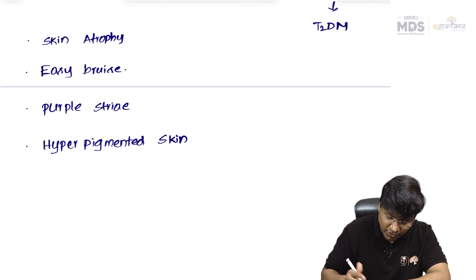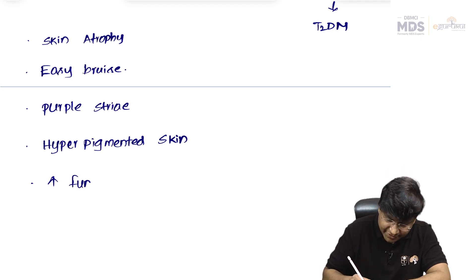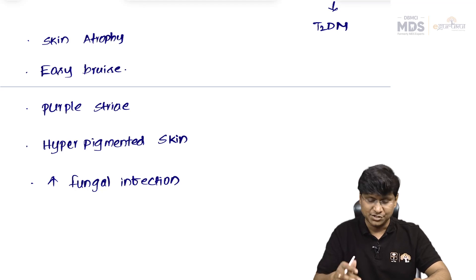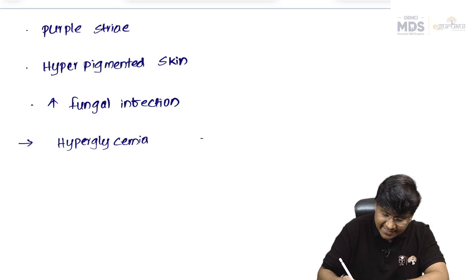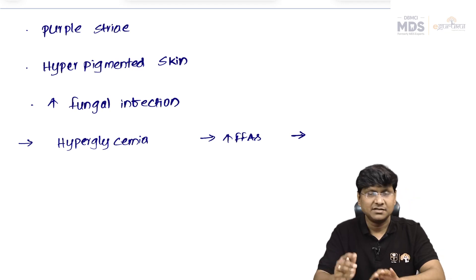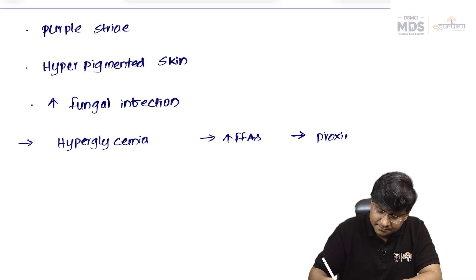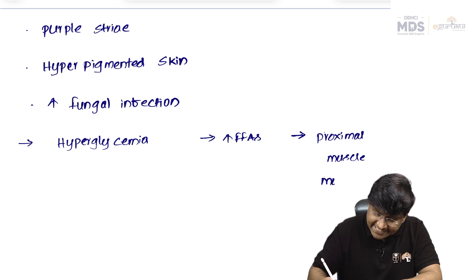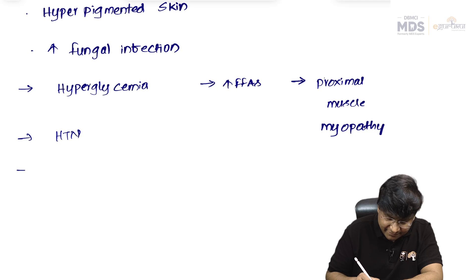Patients also develop an immunocompromised state causing increased fungal infections. Regarding metabolism: carbohydrate metabolism leads to hyperglycemia; lipid metabolism causes dyslipidemia and lipolysis with increased free fatty acids; protein metabolism shows excessive proteolysis causing proximal muscle myopathy. Cardiovascular manifestations include hypertension, and CNS manifestations include psychosis.